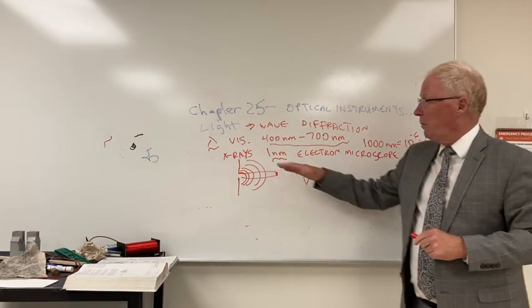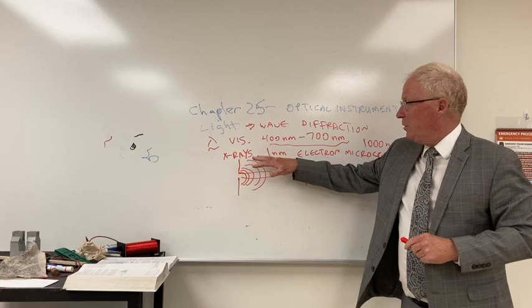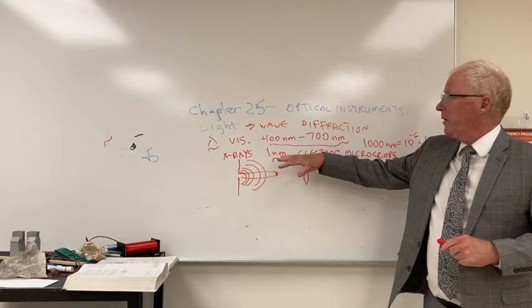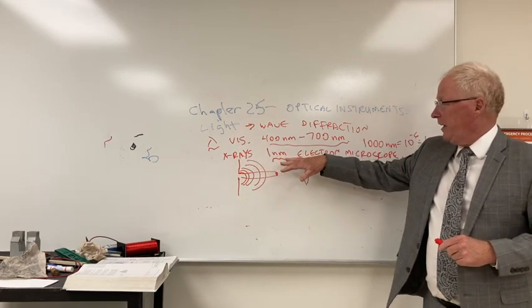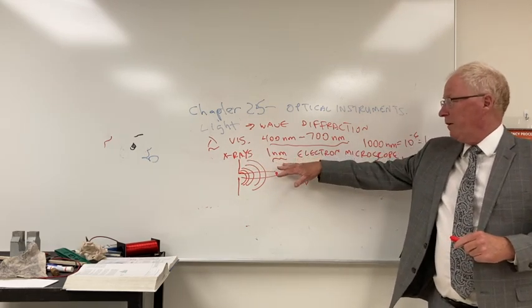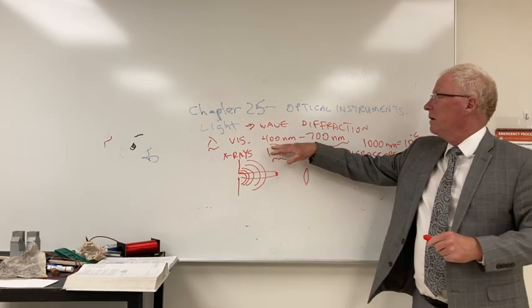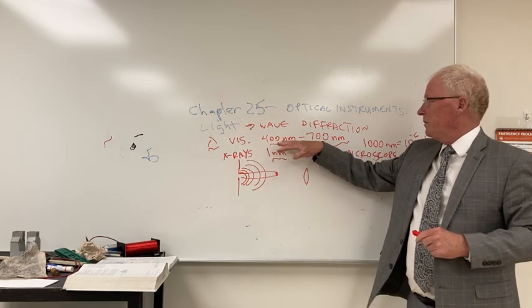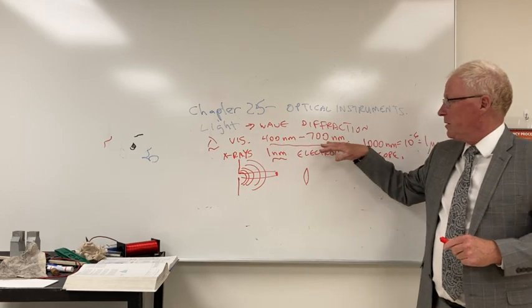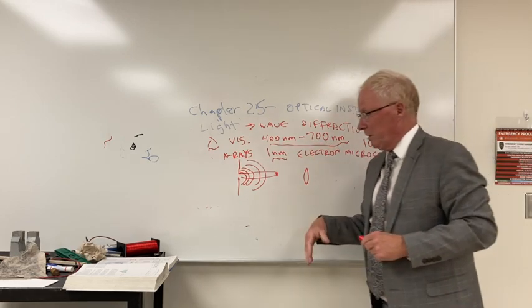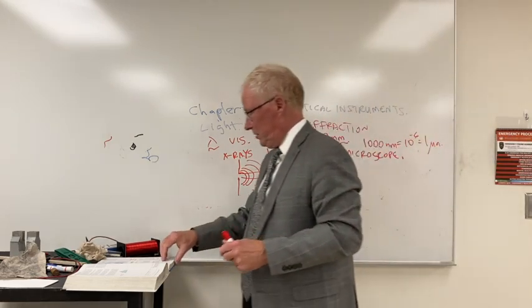This all comes back from chapter 22. X-rays are high energy, short wavelengths. Visible wavelengths are about the visible range as far as that's concerned.